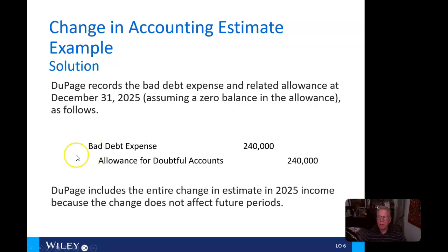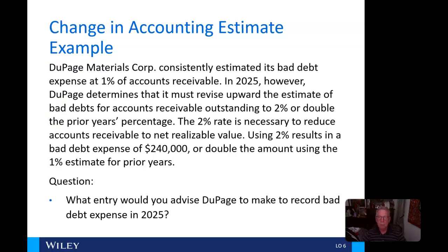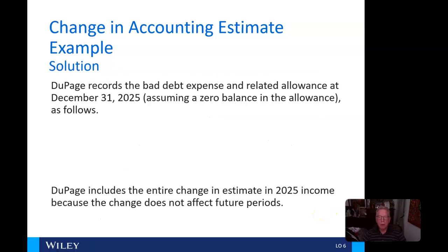The entry debits bad debt expense and credits the allowance for doubtful accounts, both for $240,000, using the 2% rate as indicated. No prior periods are adjusted in this case.